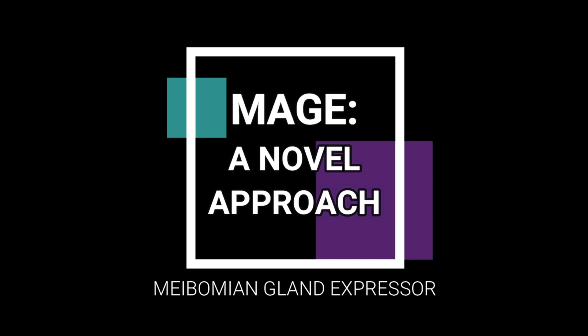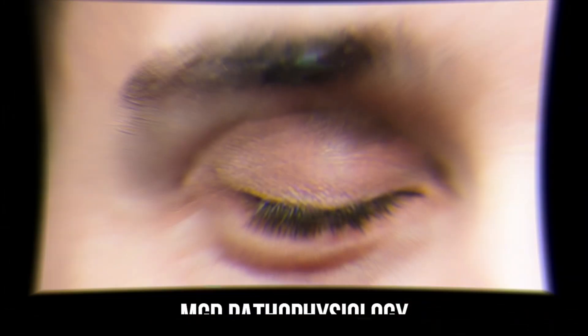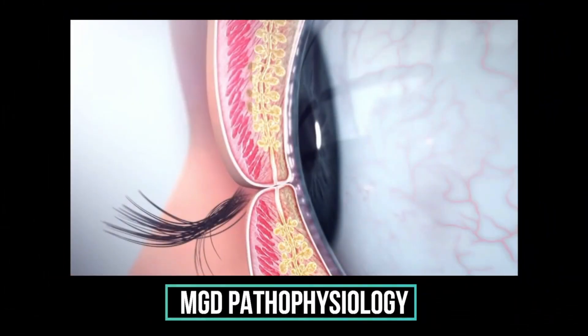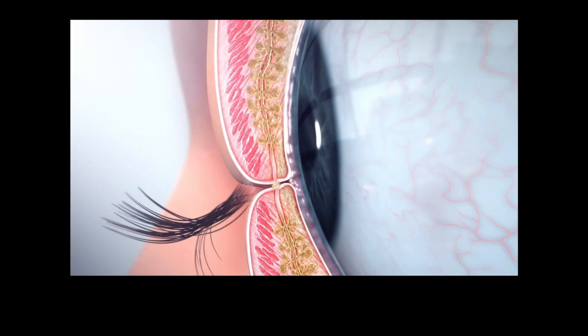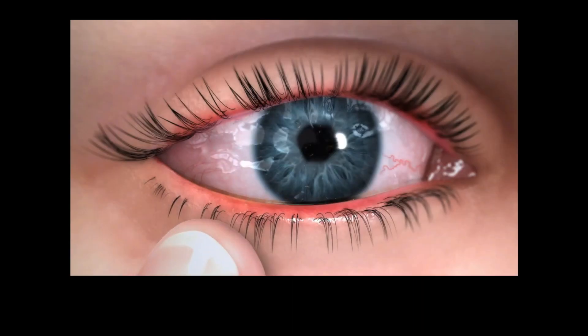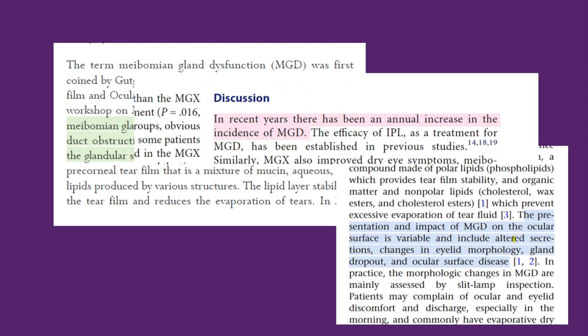Meibomian gland expression. Meibomian glands are glands present in the eyelids. They secrete the lipid layer of the tear film, which aids in reducing ocular surface water evaporation, thereby preventing dry eye. In Meibomian gland dysfunction, or MGD, there is a defective secretion of the same, which can cause discomfort, irritation, visual disruption, and dry eye.